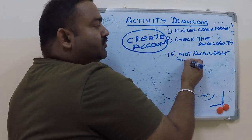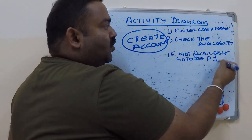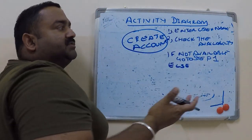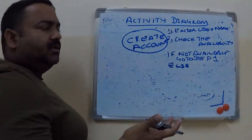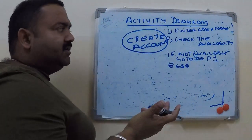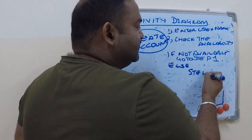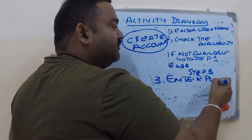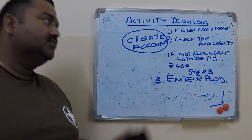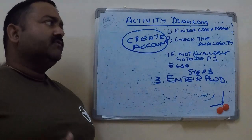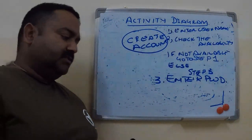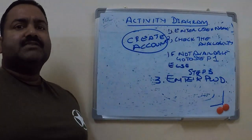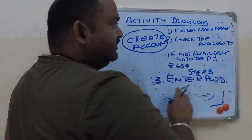If the username is not available, you go back to step one and enter another username. If it is available, you go to step three and enter a password. After that, the system checks the strength of the password, since all mail servers have rules for selecting passwords — it checks the password strength.